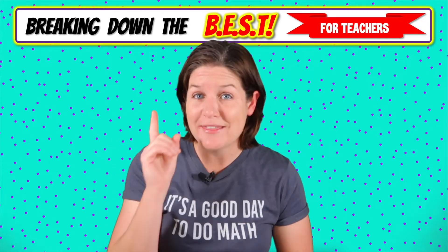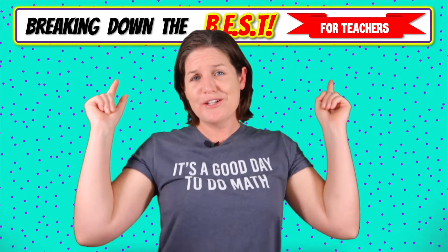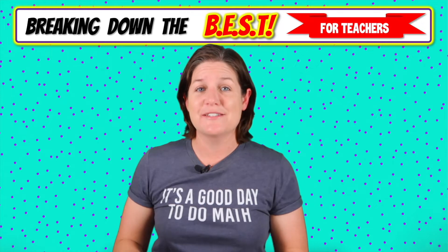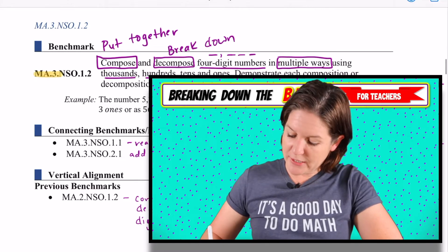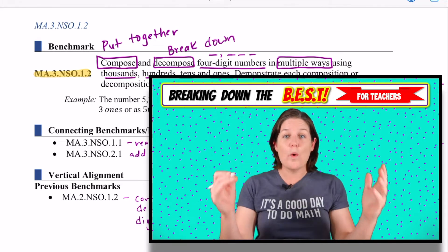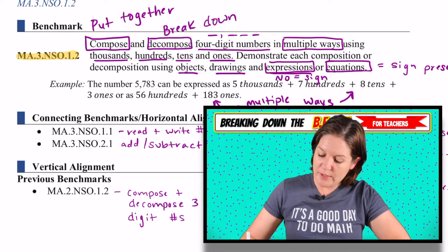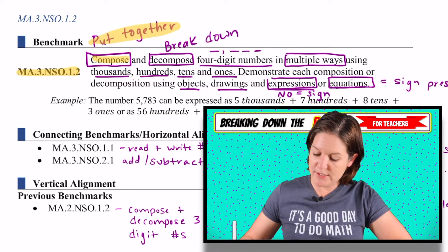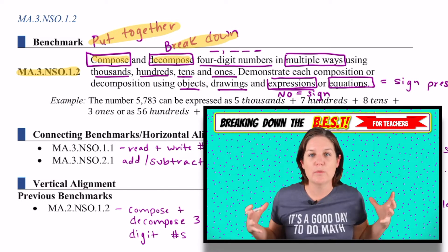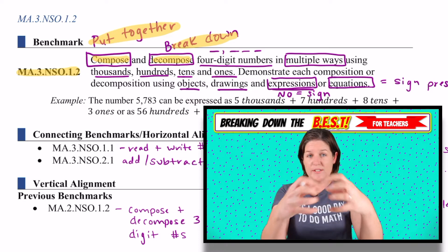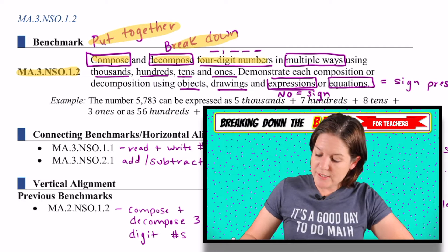I want to start this episode by thanking you for taking time out of your crazy, busy, non-stop, hectic schedule to join me on this episode of Breaking Down the Best, where today we will talk about the standard, or break down the standard, rather, this one right here. It is MA.3.NSO.1.2. So here are some of my thoughts with this standard. It says to compose, which means that we're going to put together, and decompose means to break down. So throughout this whole standard, we're taking numbers and we're either composing them, putting them together, or taking them apart and breaking them down or decomposing them. We're doing this with four-digit numbers.